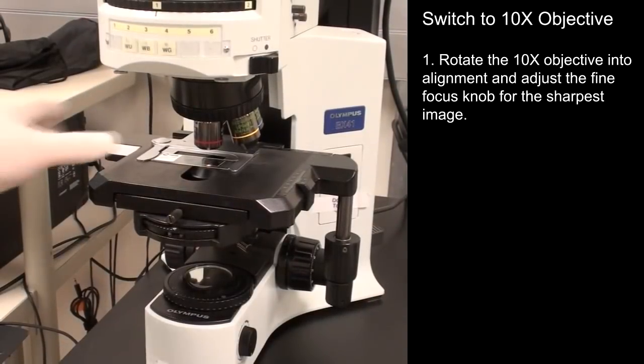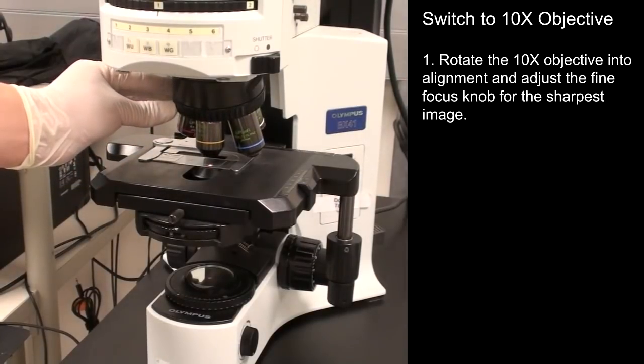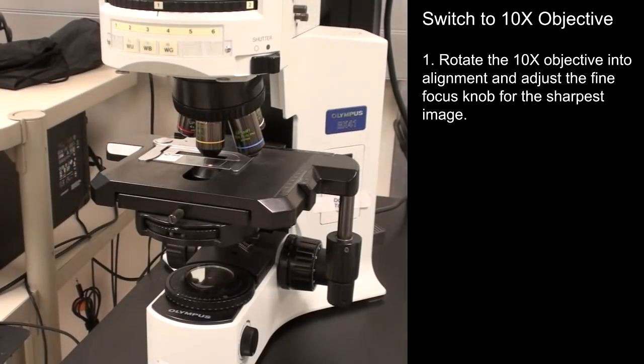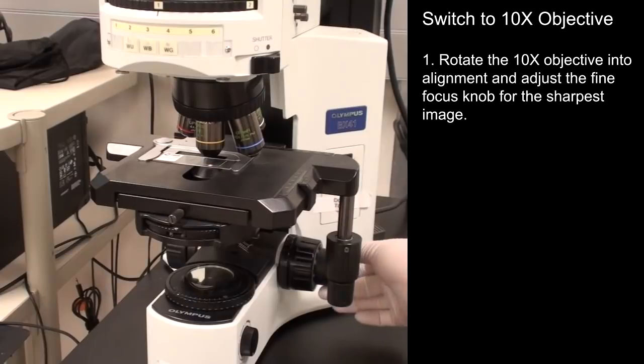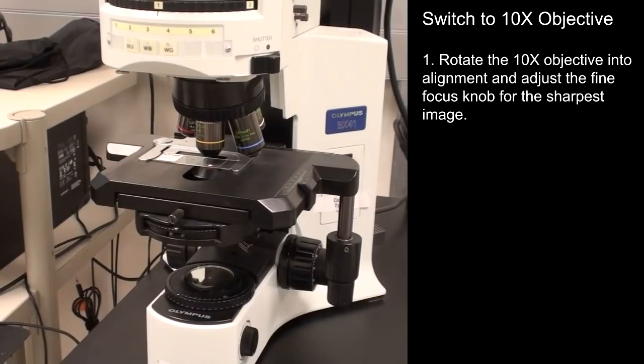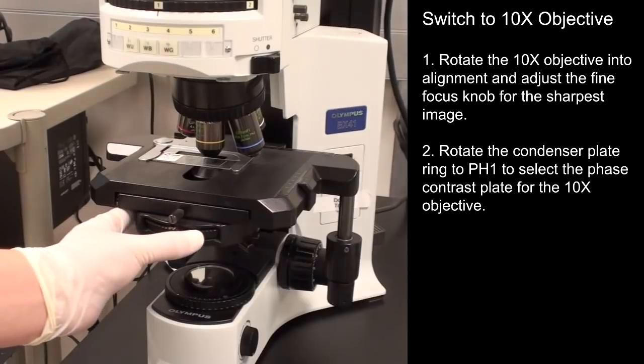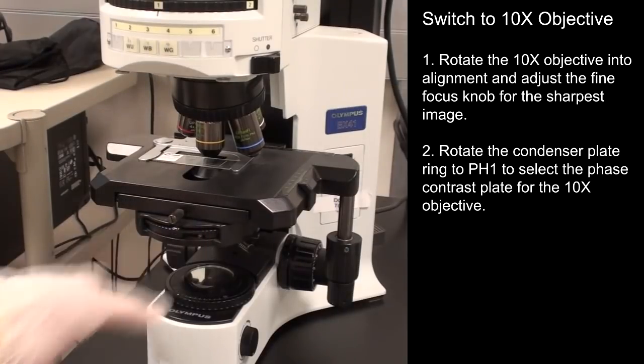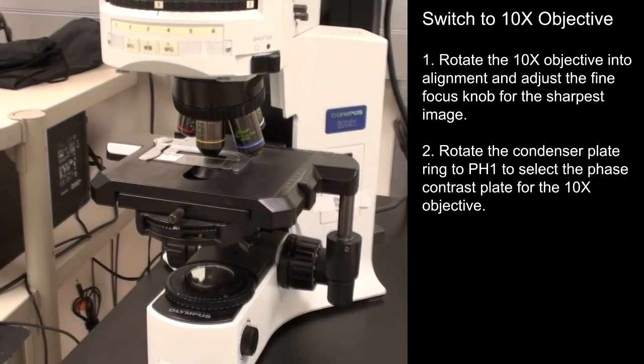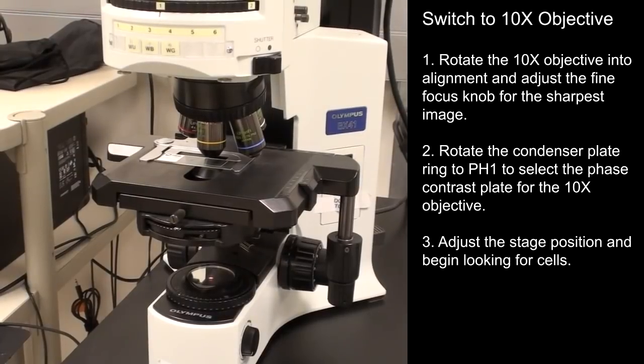Rotate the 10x objective into alignment and adjust the fine focus knob for the sharpest image. Rotate the condenser plate ring to PH1 to select the phase contrast plate for the 10x objective. Adjust the stage position and begin looking for cells.